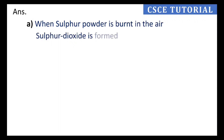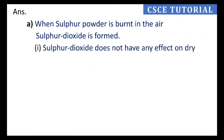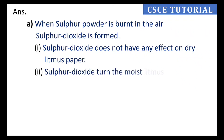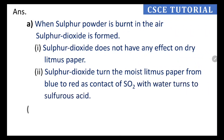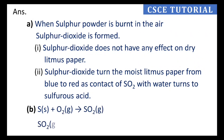If sulfur is burned in air, sulfur dioxide is formed. Dry litmus paper will not be affected. However, moist litmus paper will turn from blue to red when it comes in contact with sulfur dioxide, because sulfur dioxide dissolves in moisture to form sulfurous acid (H₂SO₃).